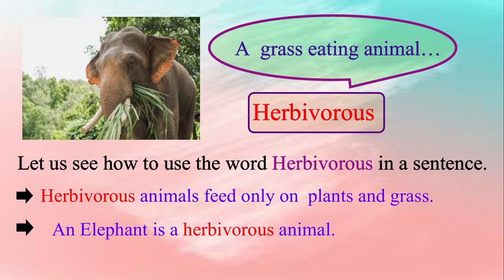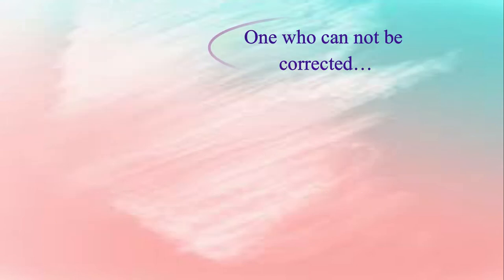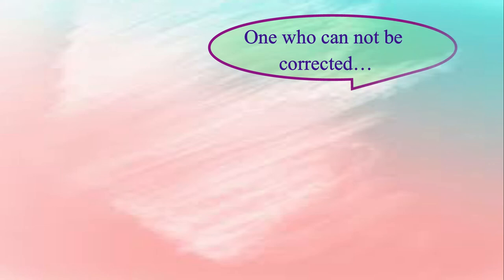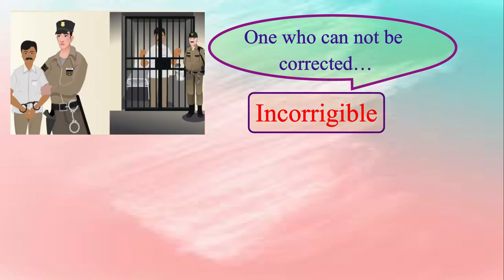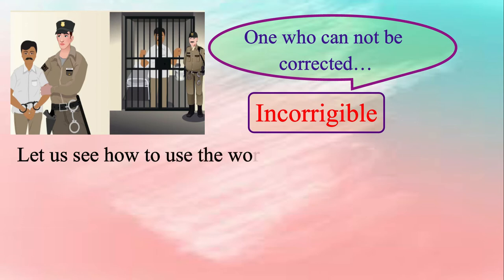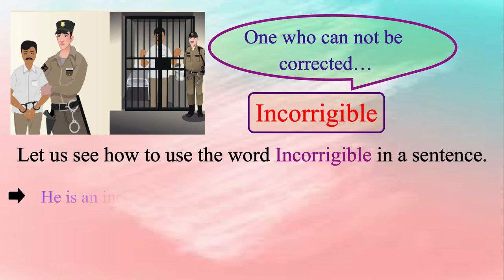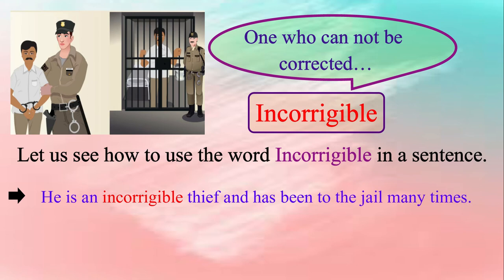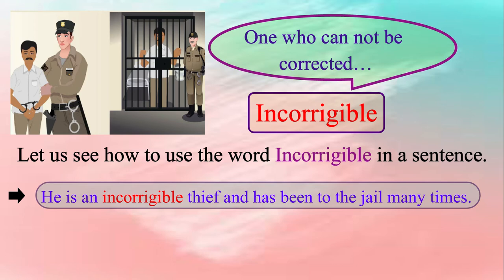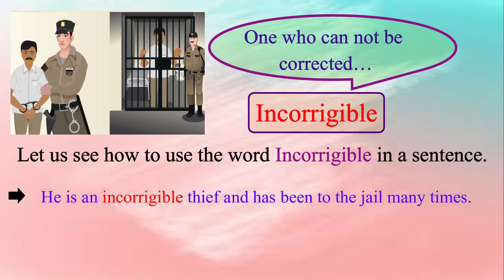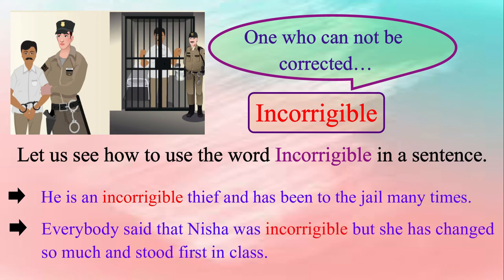Let us see the next expression. One who cannot be corrected, or we can simply say incorrigible. An incorrigible person or behavior is beyond correction, reform or alteration. Let us see how to use the word incorrigible in a sentence. Please repeat after me: He is an incorrigible thief and has been to jail many times. Everybody said that Nisha was incorrigible, but she has changed so much and stood first in class.